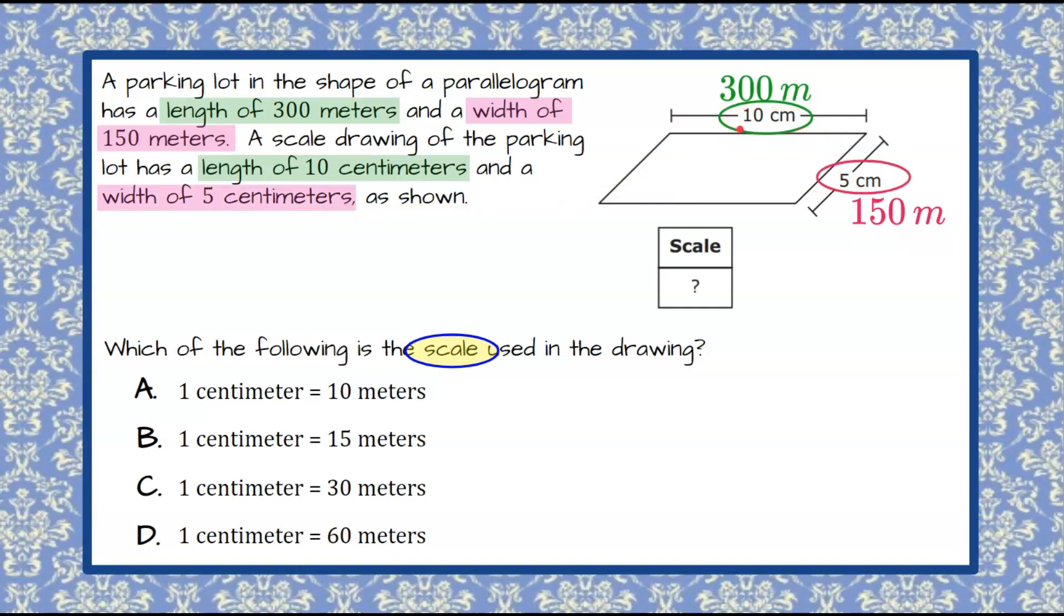So we have our drawing's length to our actual parking lot's length, and that makes a ratio. So the ratio of our lengths can be written 10 centimeters to 300 meters, a drawing to the real world parking lot. That's a scale ratio.